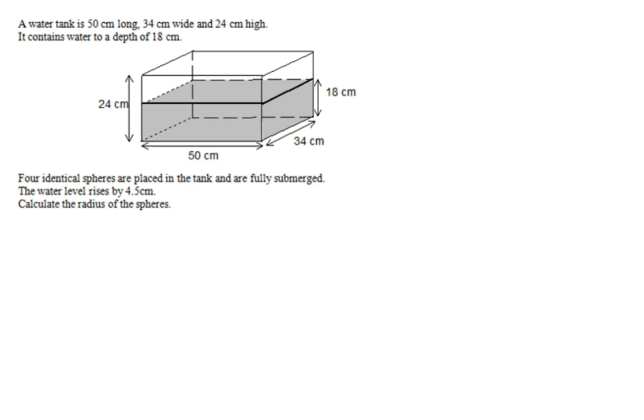Next question. A water tank is 50 centimetres long, 34 centimetres wide and 24 centimetres high. It contains water to a depth of 18. But that whole thing is 24. Four identical spheres are placed in the tank. So I'm going to draw my four spheres and they all go in. I'm already smiling because my diagram is so cute. And the water level rises by 4.5 centimetres. So can you see this time they're doing it the other way around? So what we've got to find is we've got to find the volume displaced again. So the four spheres will occupy that bit there.